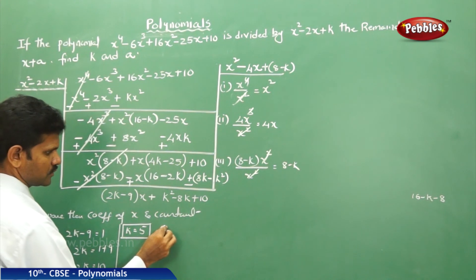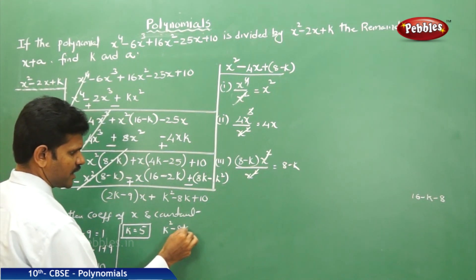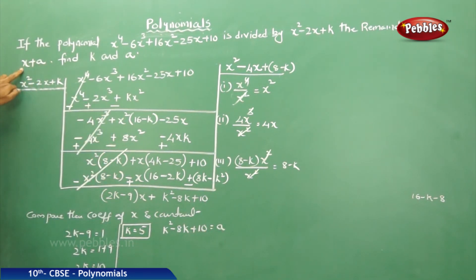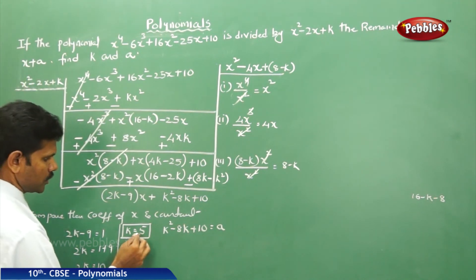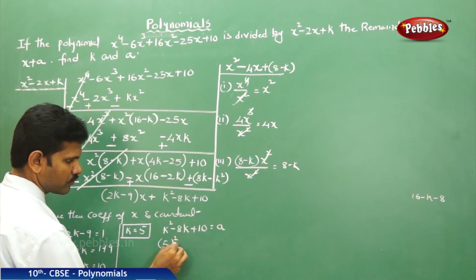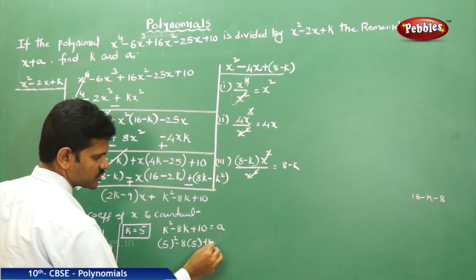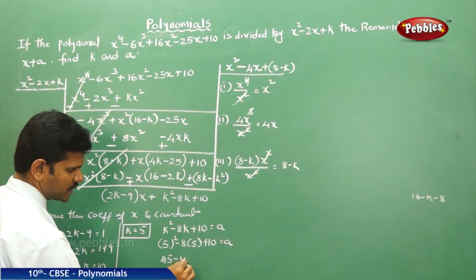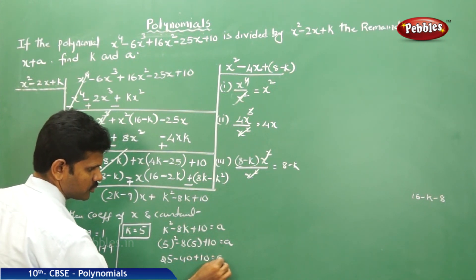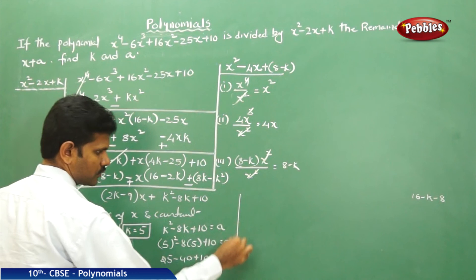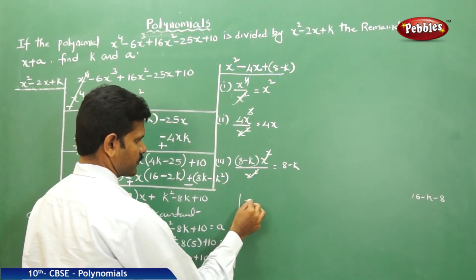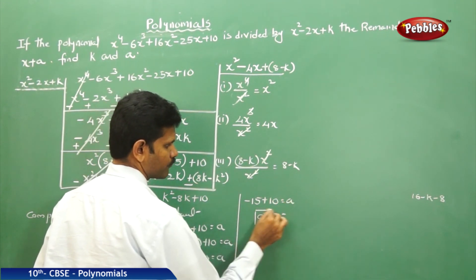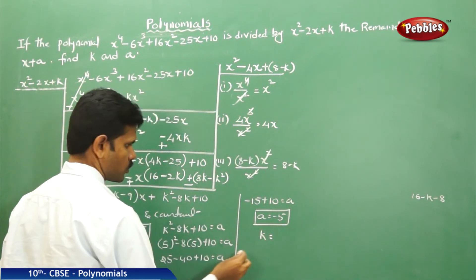Next, k² minus 8k plus 10 is equal to a. Why? Because it is x plus a. X coefficients are compared, now constants are. K value is 5. 5² minus 8 times 5 plus 10 is equal to a. 25 minus 40 plus 10 is equal to a. That is minus 15 plus 10, a is equal to minus 5. And k is equal to 5.